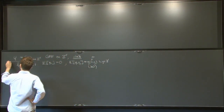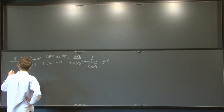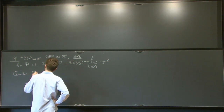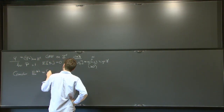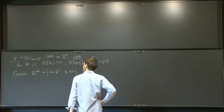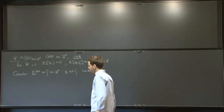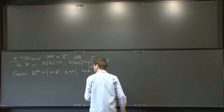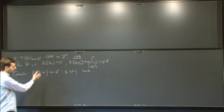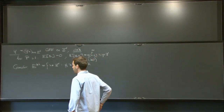So that's the Gaussian free field. Now there is a random subset that you can create out of this, which are the level sets. I'm going to look at the level sets above some number which I will call h, the height. So h is a real parameter; this is a random subset of Z^D, and it's decreasing in h. Its law is translation invariant and mixing, so it has all the good properties you might want from a random subset of Z^D.